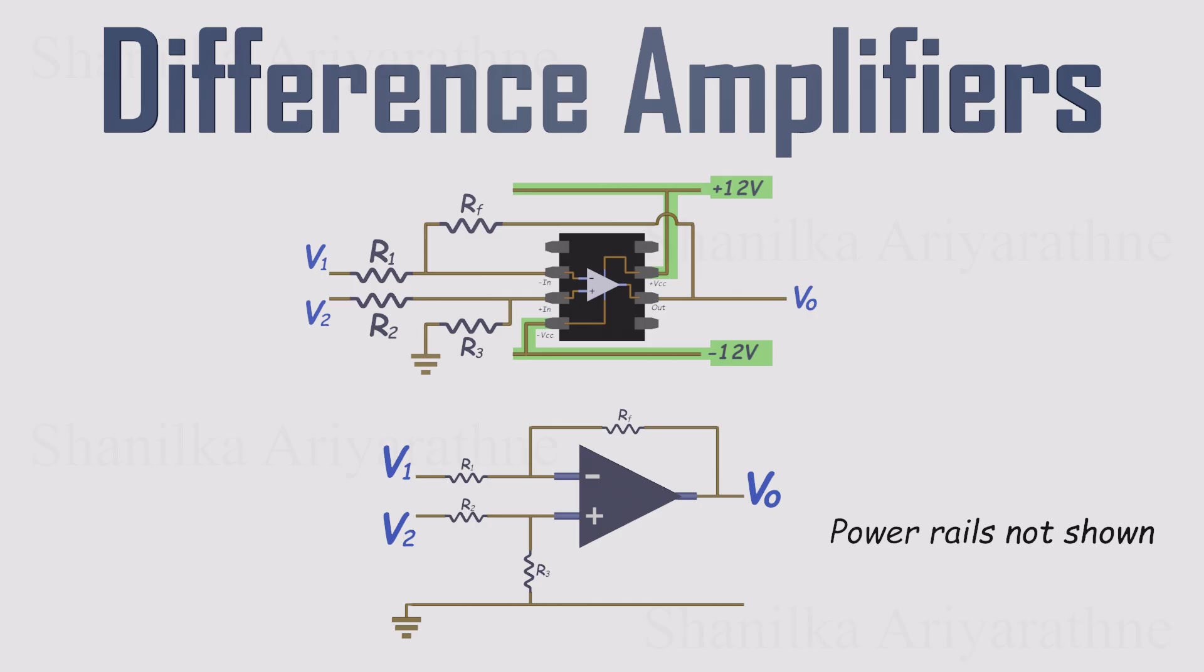Here's what we do show. A feedback resistor from the output to the inverting input, another resistor tying the non-inverting input to ground, one signal fed into the inverting input through its own resistor,